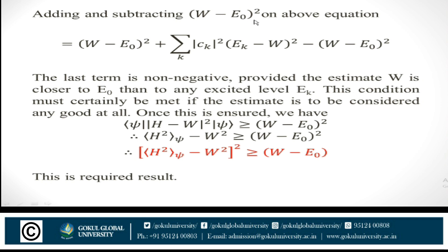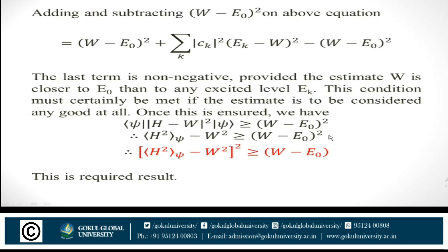Adding and subtracting (W - e₀)² in the above equation, we get (W - e₀)² plus Σ|c_k|²(e_k - W)² - (W - e₀)². The last term is non-negative, which provides the estimate that W is closer to e₀ than to any excited level e_k. Once this condition is ensured, we have ⟨ψ|(H-W)²|ψ⟩ ≥ (W - e₀)², and therefore √(⟨H²⟩ - W²) ≥ W - e₀, which is our required result.